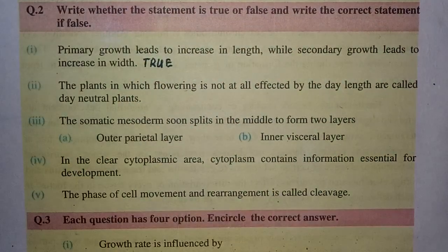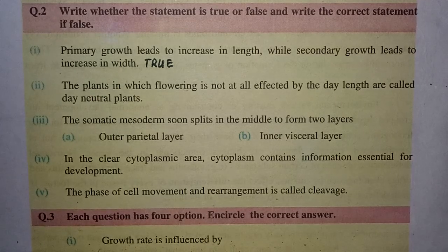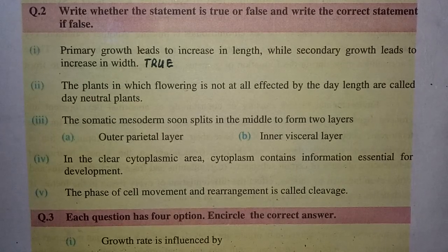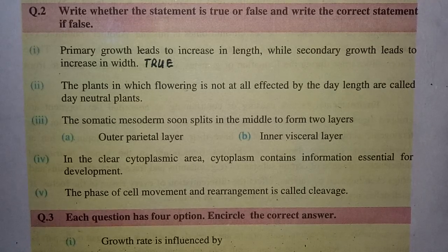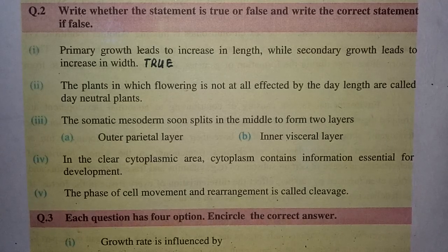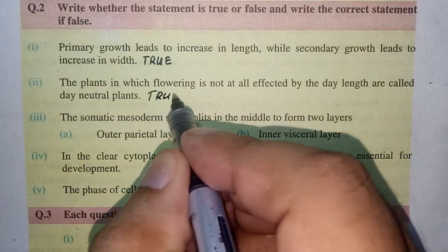Let's move toward the second true/false. The plants in which flowering is not at all affected by the day length are called day neutral plants. That is totally true.